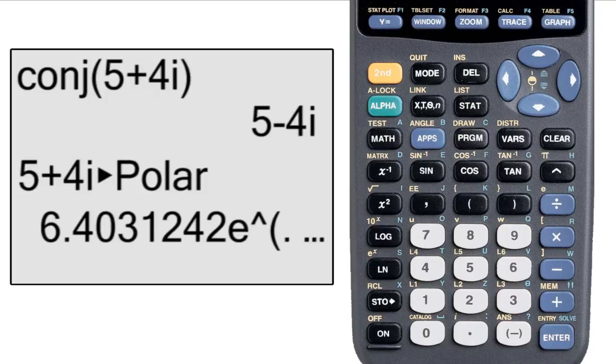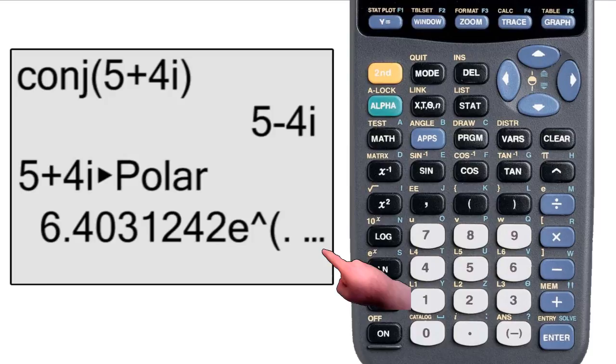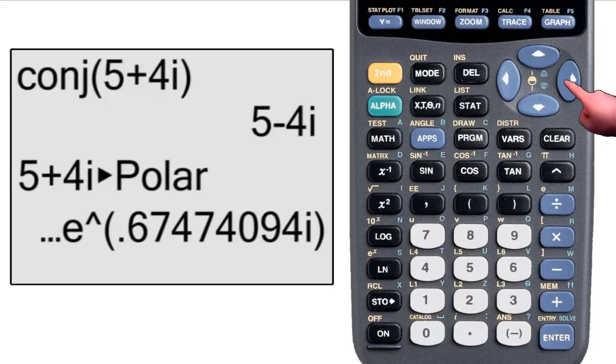As a side note, notice that in this example the answer has an ellipsis after it. And as a quick English lesson, an ellipsis is the same as dot dot dot. This means that we can hit the right arrow key to see more of the answer. We'll see much more of this when we get to matrices.